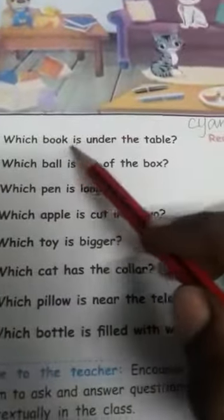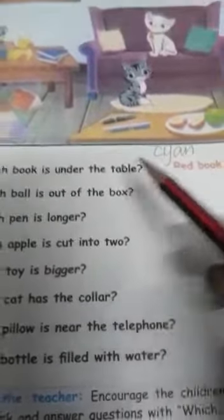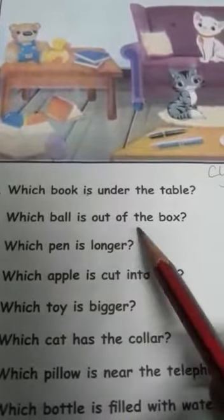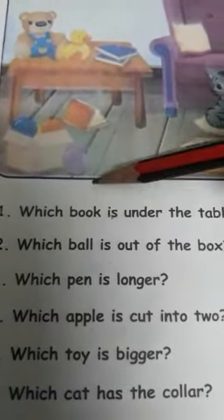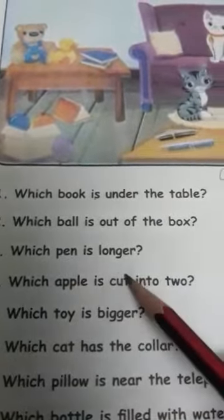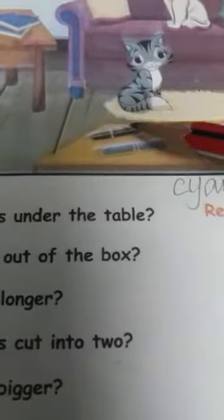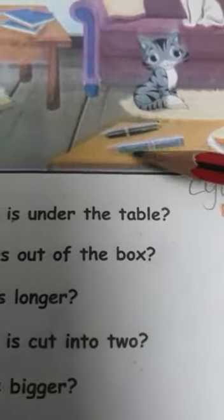Next, having some questions. Which book is under the table? Red book is under the table. Which ball is out of the box? Purple ball is out of the box. Which pen is longer? See here. Yes, blue pen. Blue pen is longer.